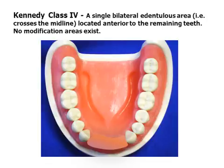The Kennedy Class 4 arch is defined as a single, bilaterally edentulous area, crossing the midline and located anterior to the remaining teeth. No modification areas exist.